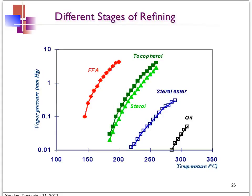The principle is based on the different degree of volatility of different components compared to the oil. This is shown in a plot of vapor pressure against temperature. For the oil, it requires high temperature to become volatile, whereas free fatty acids, which are smaller compounds, are more volatile even at a lower temperature. This different degree of volatility at different temperatures enables these different components to be separated from the oil.